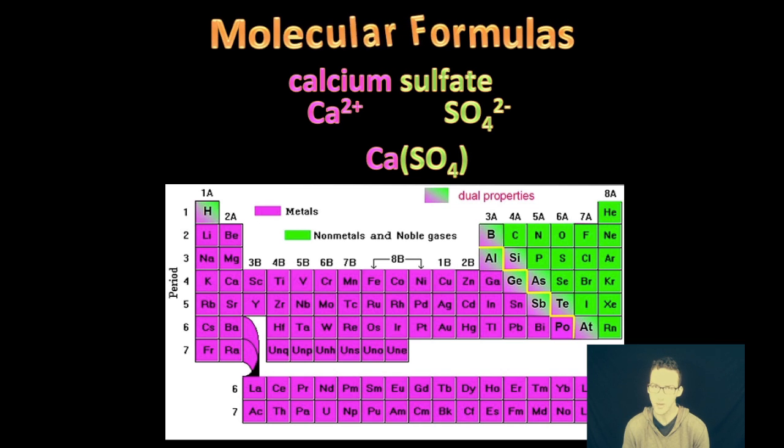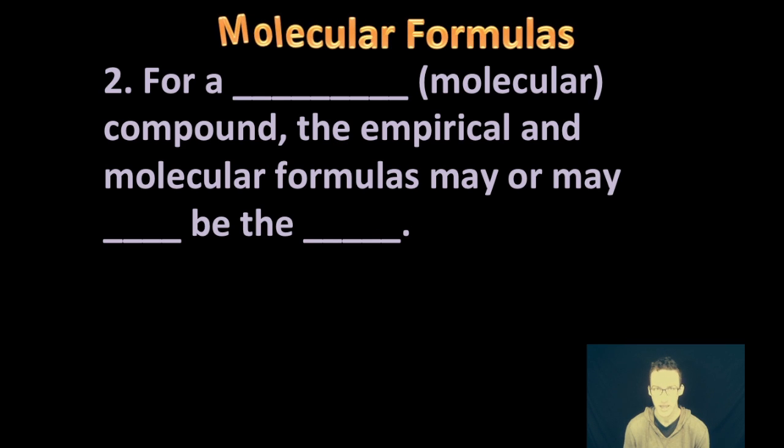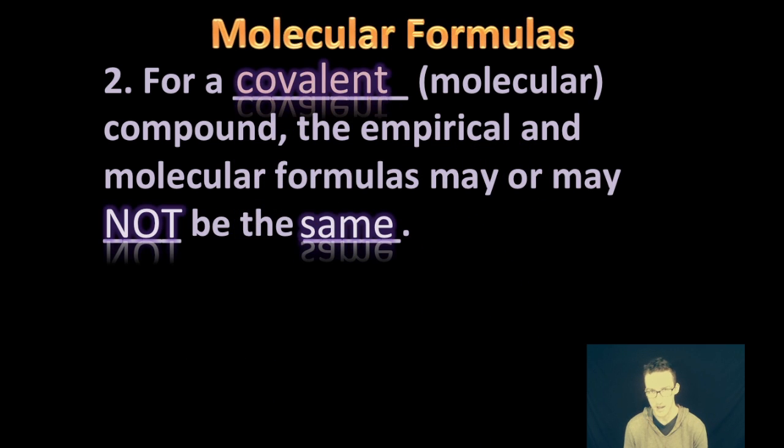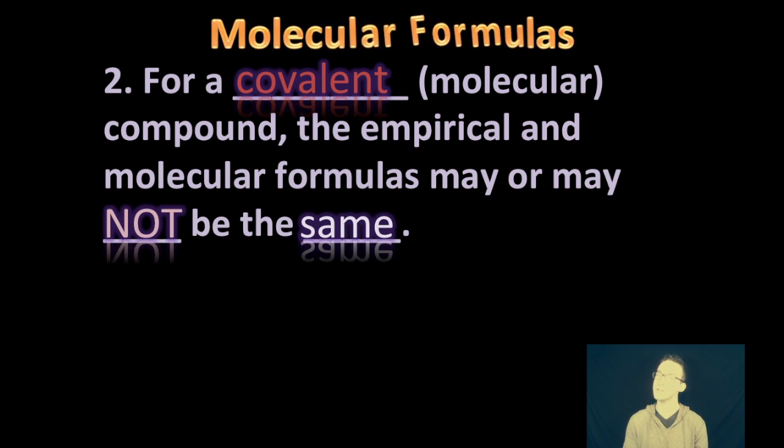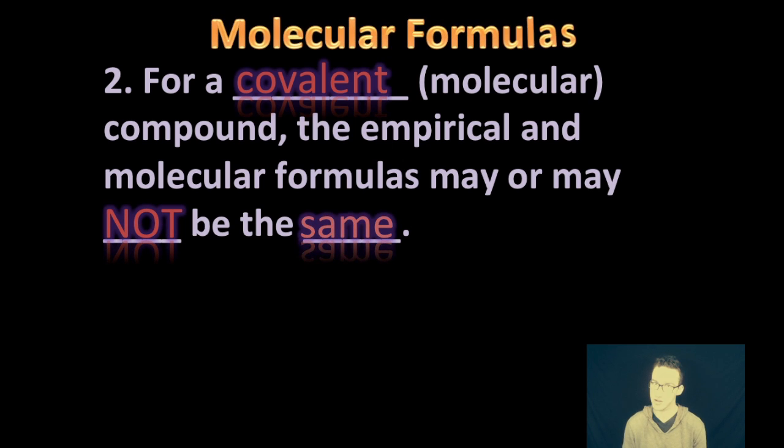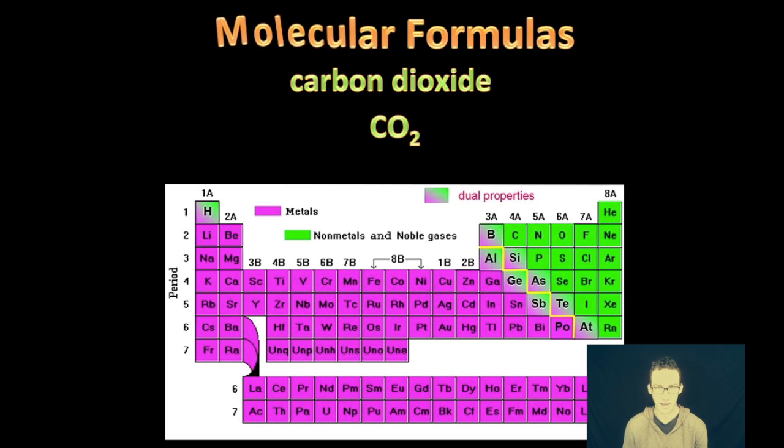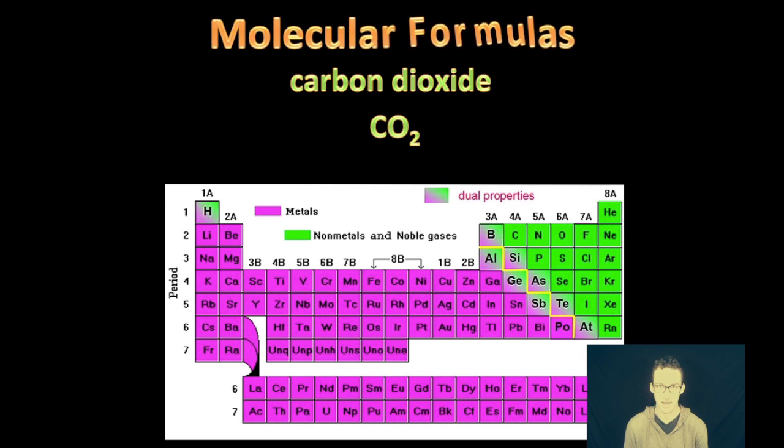Again, we're really only going to be thinking about molecular formulas for the most part when we talk about covalent compounds. So your covalent or molecular compounds is where we really run into the question of, well, is this empirical or is this molecular? Because in covalent compounds, it may or may not be the same. So, again, let's go back and take a quick look at carbon dioxide. Here's an example of a covalent compound where empirical and molecular formulas are the same, identical. The smallest ratio is one to two. The true or actual formula of carbon dioxide shows a ratio of one to two.